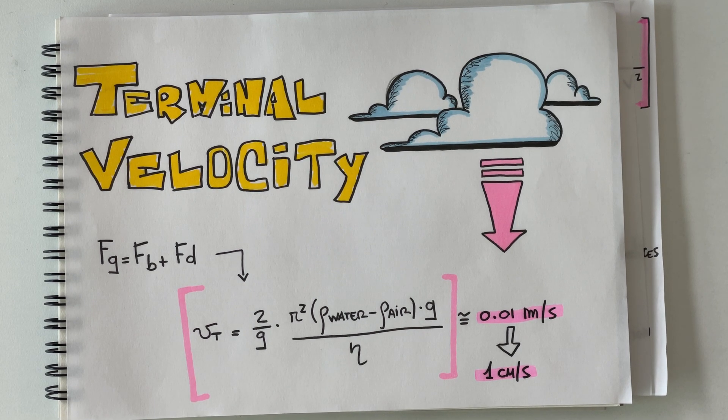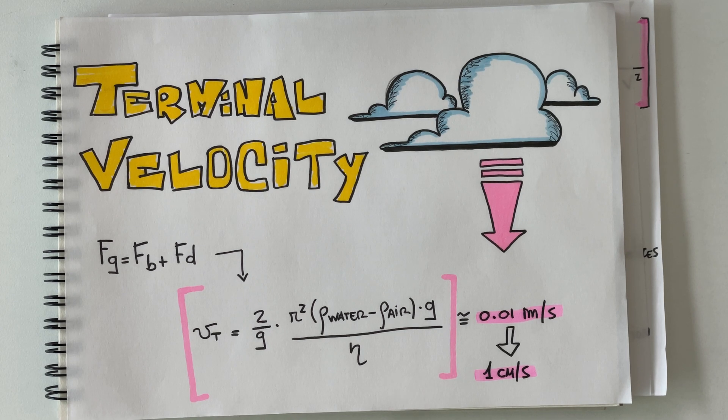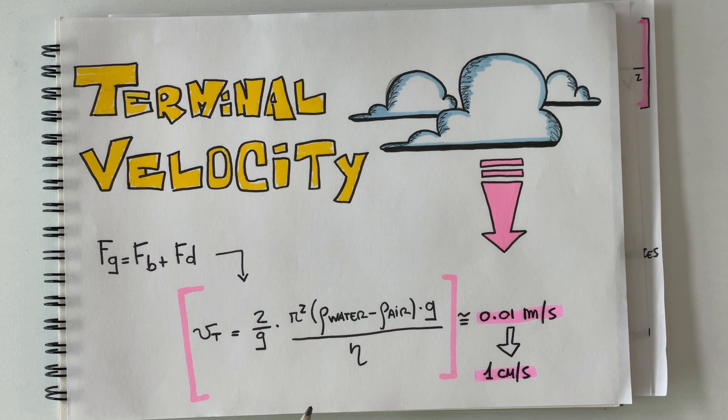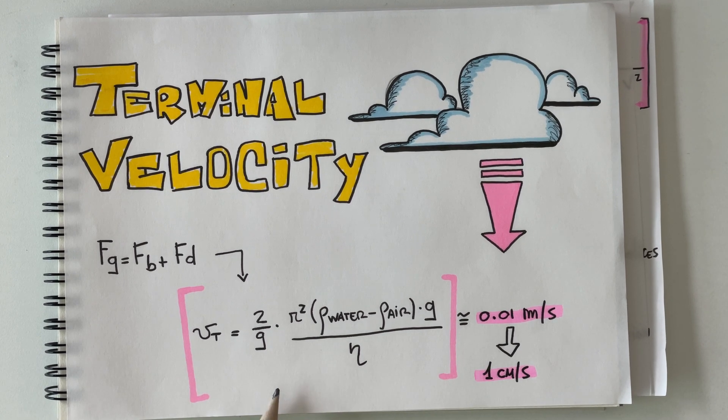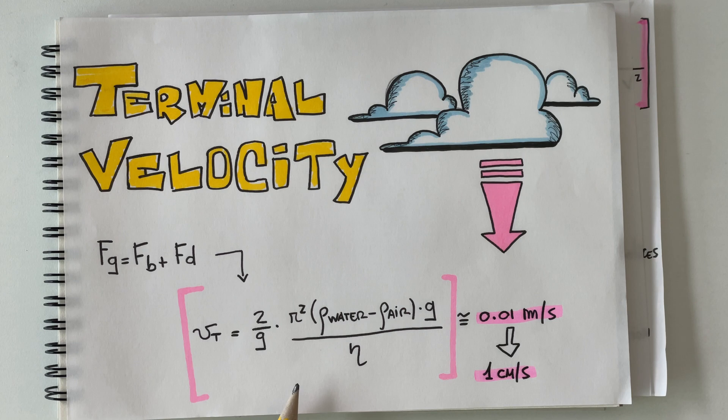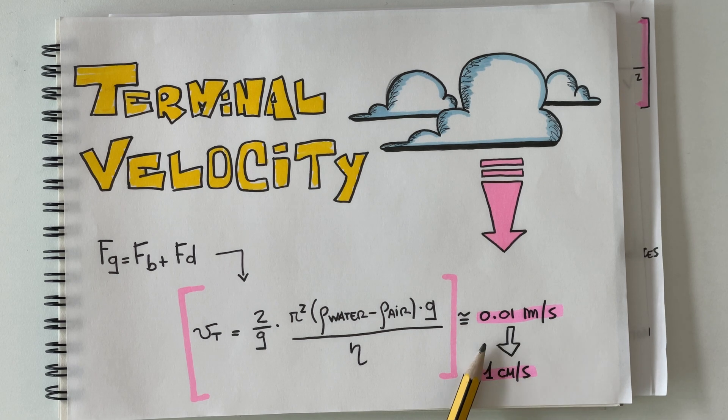So for our case we assume that we have a diameter between 5 to 50 microns for each droplet. Of course this is an assumption. So if you plug in all these values into the formula we get a really really interesting result.